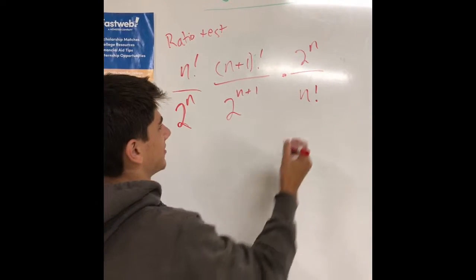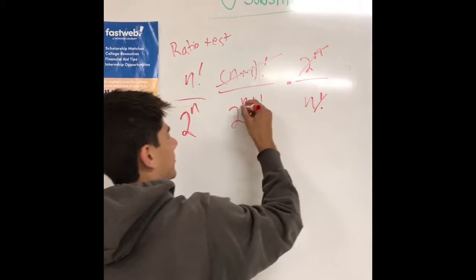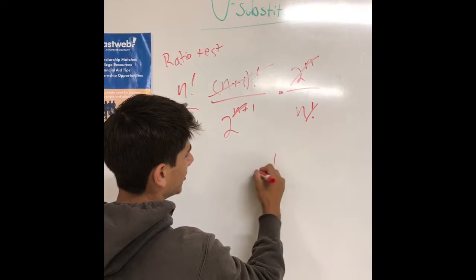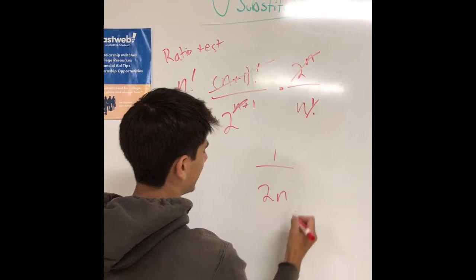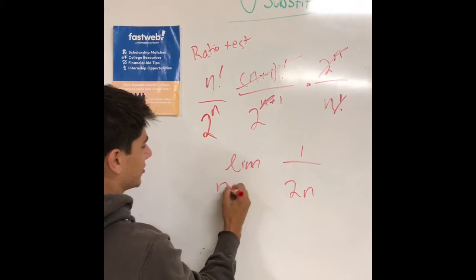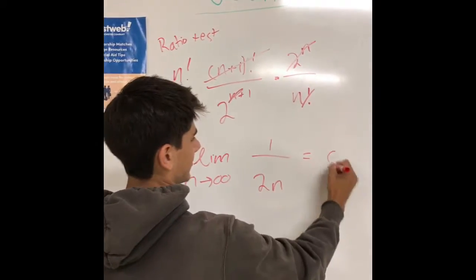Cross everything out, and we're left with 1 over 2N. Then we take the limit as N goes to infinity. That's zero.